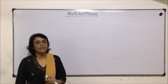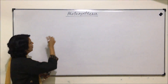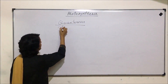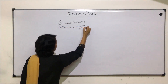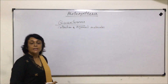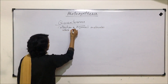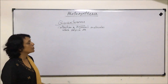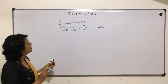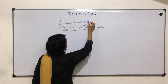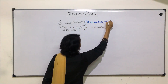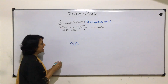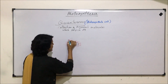Before starting the photosystems, that is PS1 and PS2, let us understand what is a quantosome. A quantosome is actually a collection of pigment molecules which help in the process of photosynthesis. We can also call it a collection of pigments which are responsible for the photosynthetic process. When we talk of this quantosome or photosynthetic unit, this unit has one chlorophyll — that is chlorophyll A — and around it there are many other pigments, which we call the accessory pigments.